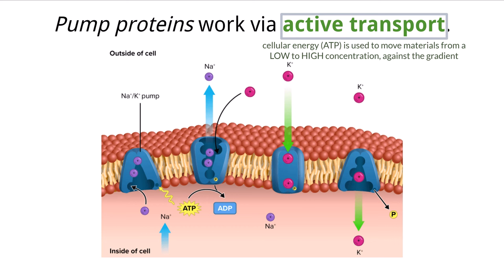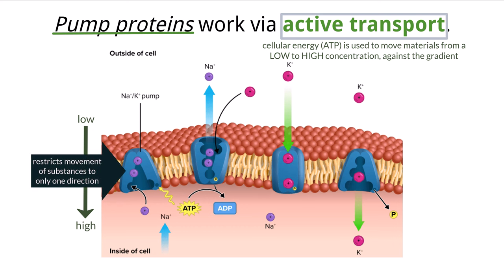Much like water and osmosis, molecules and ions tend to spread out and diffuse into space when given the chance. So if we are trying to put them all back together on one side of the membrane — which is against what they will naturally do — it requires energy. Examples of active transport for the IB exam include specific integral proteins called pump proteins, which differ from the channel proteins discussed earlier. Pump proteins use energy, ATP, to move a substance against its gradient from a low concentration to a high concentration. They restrict movement in only one direction and use conformational change to do so, unlike channel proteins which can move substances in both directions.